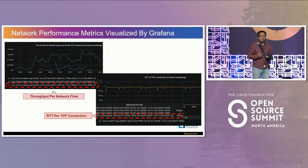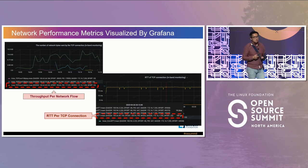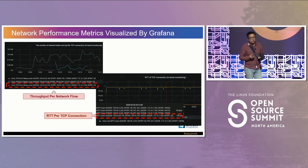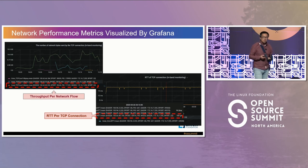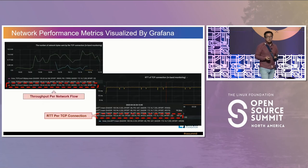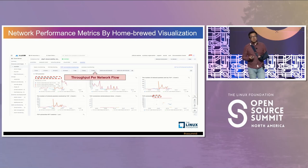Here are some examples of the data we collect with eBPF. The top figure shows network throughput per network flow, where network flow means the five-tuple: two IPs, two ports, and protocol type. The bottom shows network latency per connection flow — we show our customers RTT, connection window size, and transmission rate. We provide APIs so customers can build their own dashboards, or they can use our own in-house dashboard.